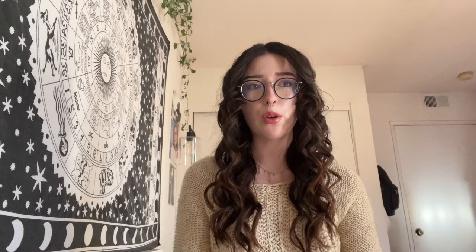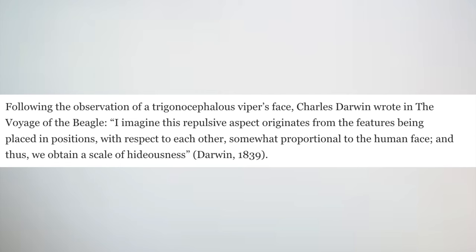The state of emotional revulsion takes place in the uncanny valley — between the barely human appearance and the fully human appearance. At this stage, the robot who looks almost like a human serves as a strange spectacle to the observer, who feels a sense of uneasiness or distaste. Although the uncanny valley originated as a solidified concept in Mori's work, he was not the first to identify the phenomenon. In an anecdote from Charles Darwin after observing a viper's face, he wrote in The Voyage of the Beagle: "I imagine this repulsive aspect originates from features being placed in positions with respect to each other somewhat proportional to the human face, and thus we obtain a scale of hideousness." Darwin's experience seems to align with Mori's concept, perhaps revealing a certain cognitive process underlying the phenomenon.